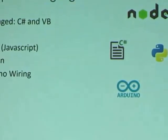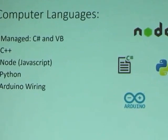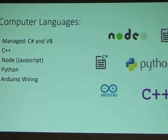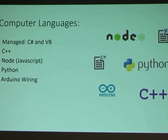For computer languages, you can use managed languages like C# and VB to write Universal Windows Applications, or C++ if you want the power for algorithm-heavy work. If you're a JavaScript developer you can use Node — you can run Node apps. You can also write Python apps.